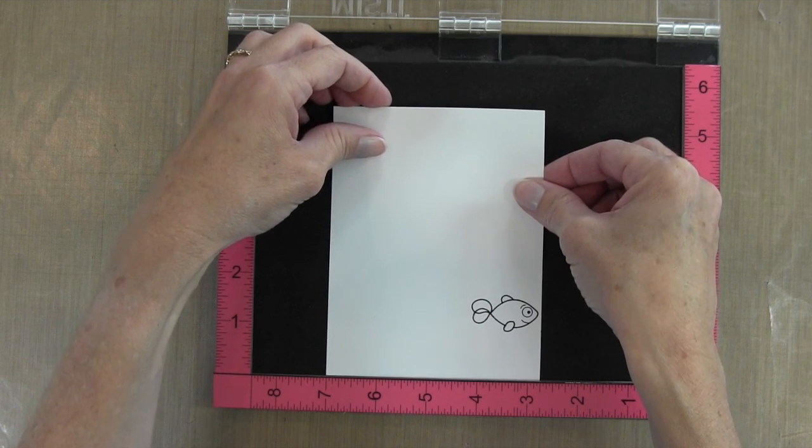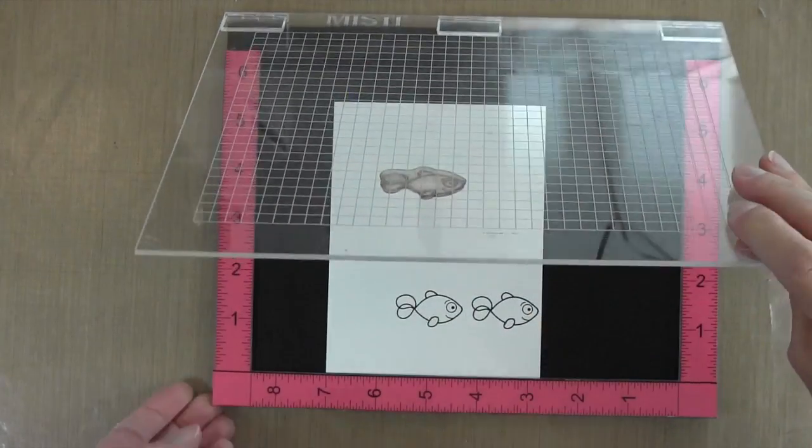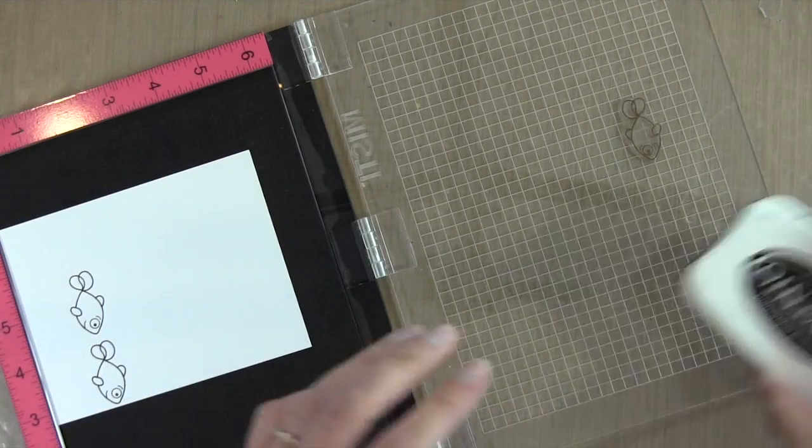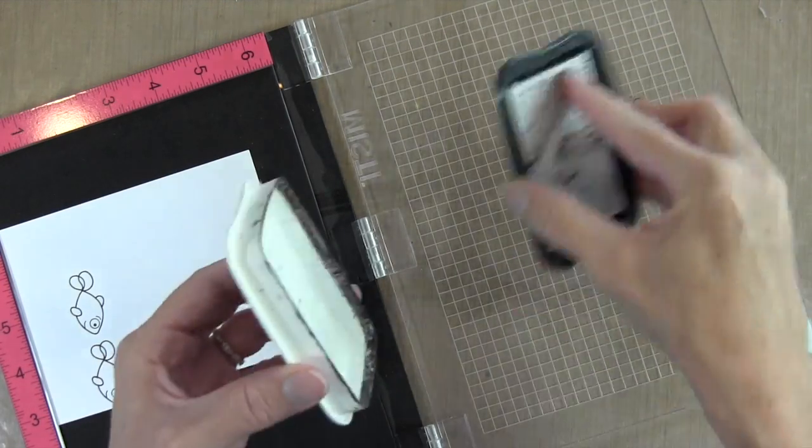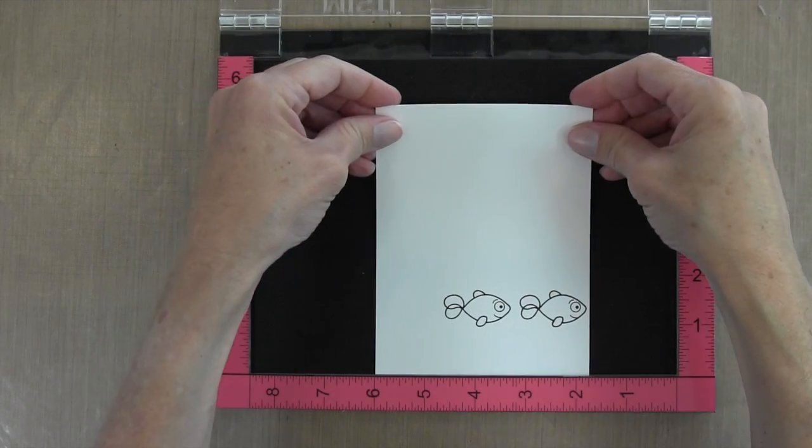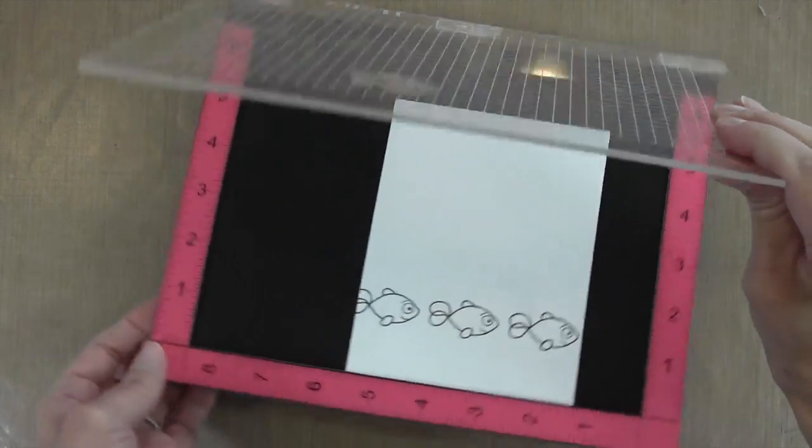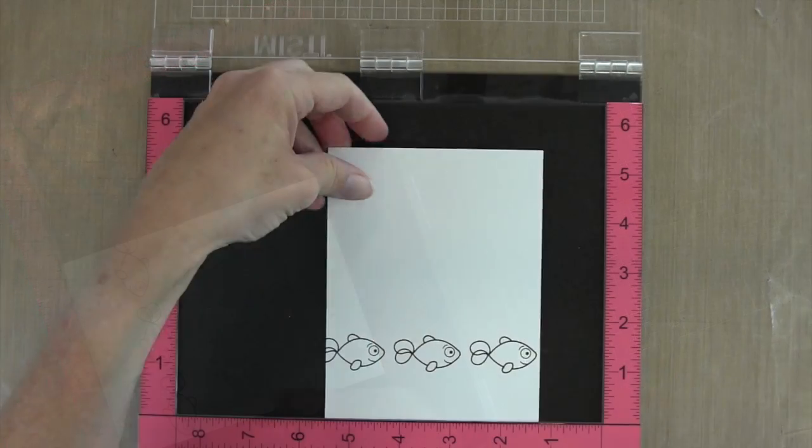I determined that an inch and a half was perfect for this particular fish, so you'll have to figure out what the best measurement is for the stamp image you're using. I'm going to do this one more time, ink up with some Memento, then move my cardstock again an inch and a half to the right and stamp it down. That gives me three perfectly aligned fish.